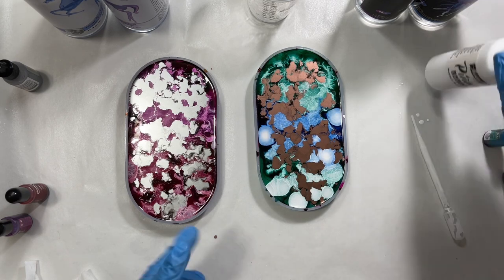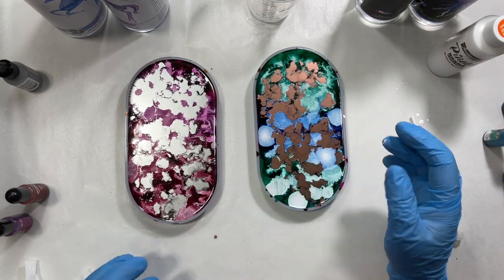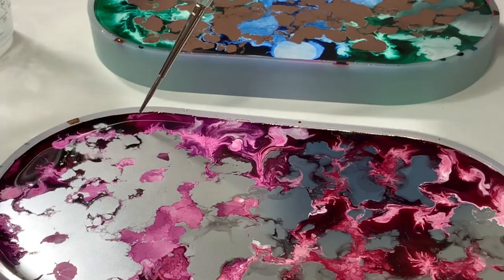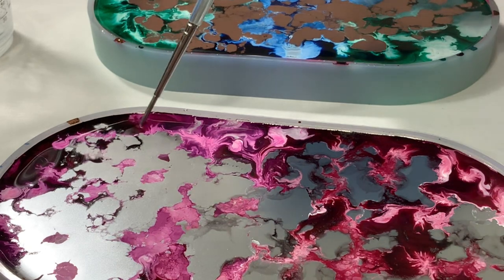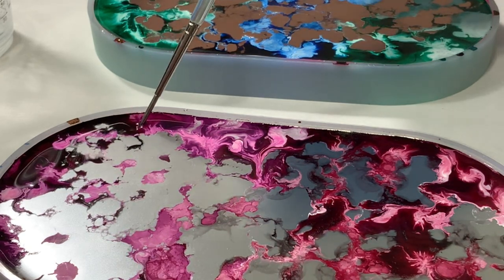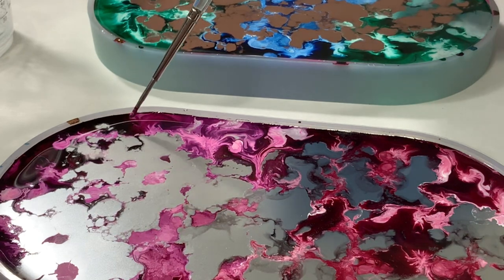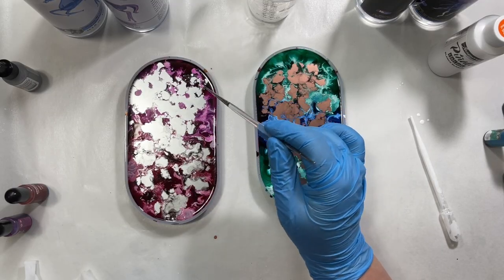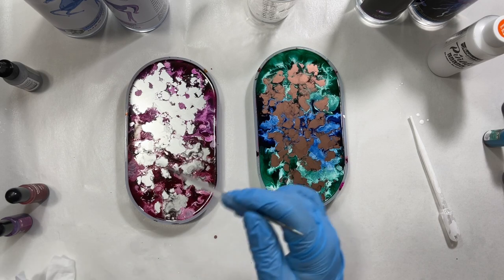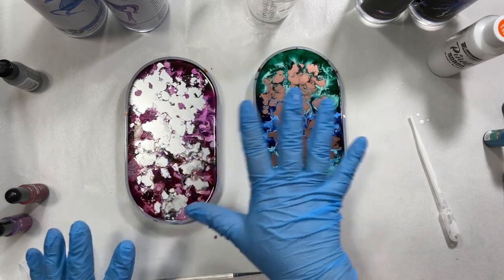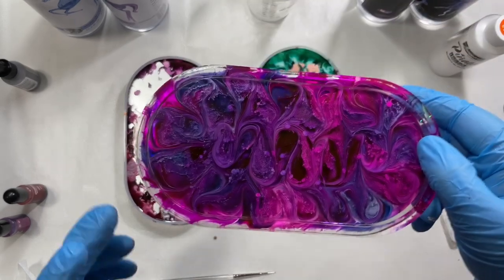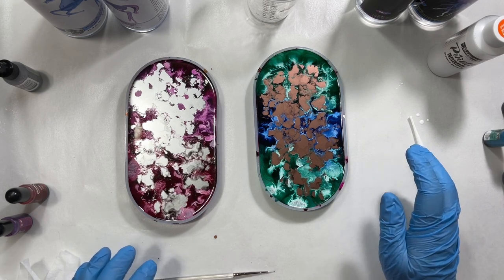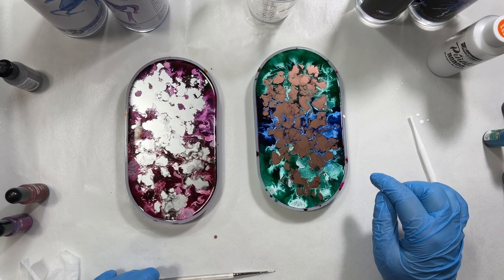I'm just gonna let these sit now. I will come back. I'm gonna let them sit until I can dip my tool in, and when I pull it out, the resin stays on the tip and it pulls up a string. That's how I know it's ready to swirl. If you swirl it too soon, it's just gonna blend out and it's not gonna keep the nice sharp edges.